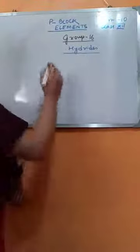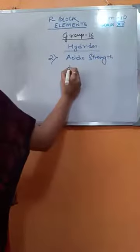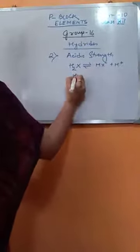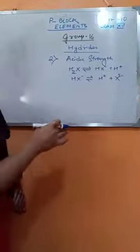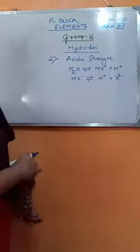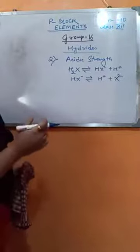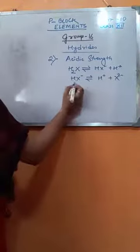Now I will come to the next property, which is acidic strength. The hydrides of Group 16 are weak dibasic acids. To explain the acidic trend of the hydrides in Group 16 — as we move down the group, the stability of the hydrides decreases because of the poor overlap of the small hydrogen atom with the large atoms on moving down the group.